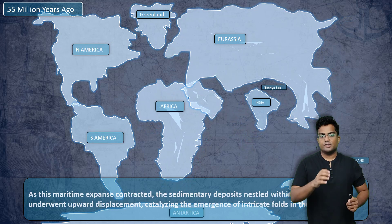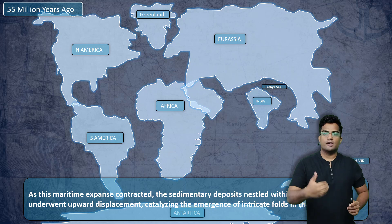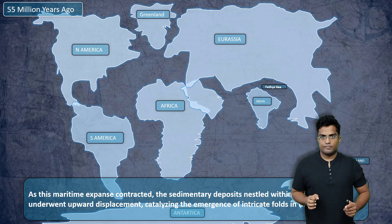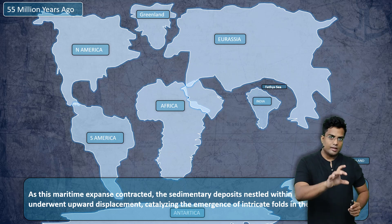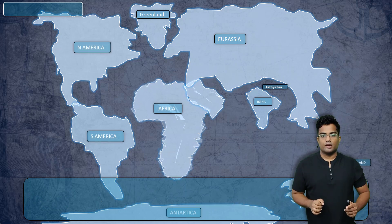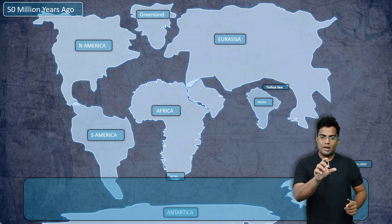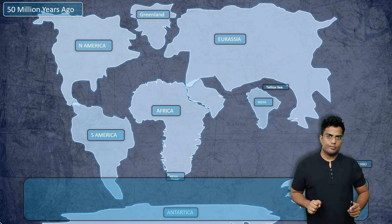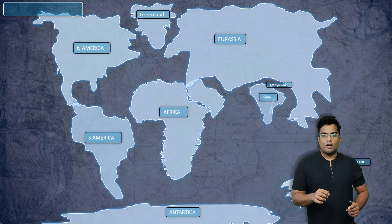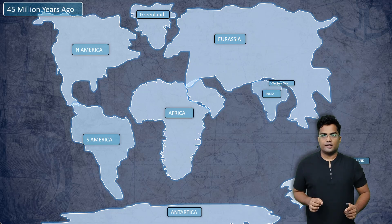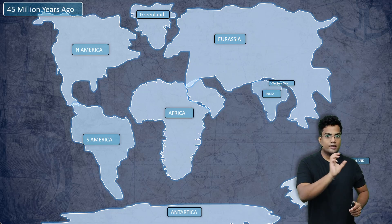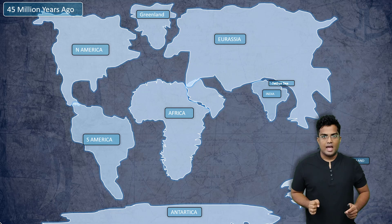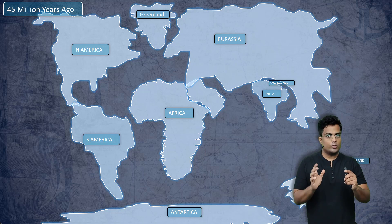Antarctica is expanding and Australia is forming into its current shape. India has almost reached parts of Eurasia and is closing the gap in the Tethys Sea. Africa is getting developed, and Saudi Arabia has also formed. India has almost reached Eurasia and the Tethys Sea has been squeezed.